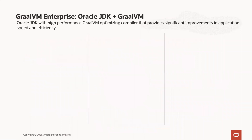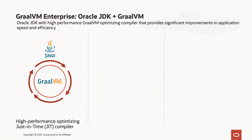We see this compiler technology manifesting in a few key ways. The first is as the JIT compiler — we plug the GraalVM JIT compiler into HotSpot and improve the performance of Java applications and any other bytecode-based application: Scala, Java, Clojure, etc. With Oracle GraalVM, what you're getting is the Oracle JDK with the GraalVM JIT compiler installed by default.